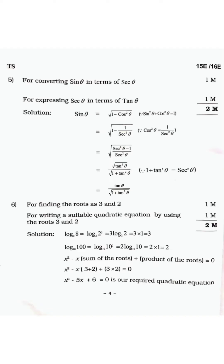For Question 5 — converting sine theta in terms of secant theta — if you convert sine theta into secant theta you will get one mark, and if you convert secant theta to tan theta you will get one more mark, totaling two marks. If you do only half the problem you get one mark. For Question 6 — writing a suitable quadratic equation using roots 3 and 2 — you will get one mark, again totaling two marks.